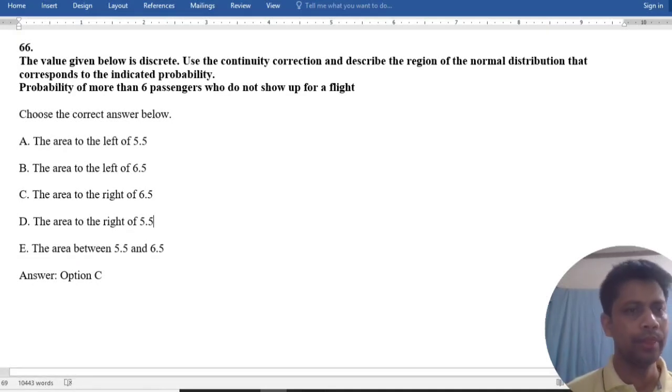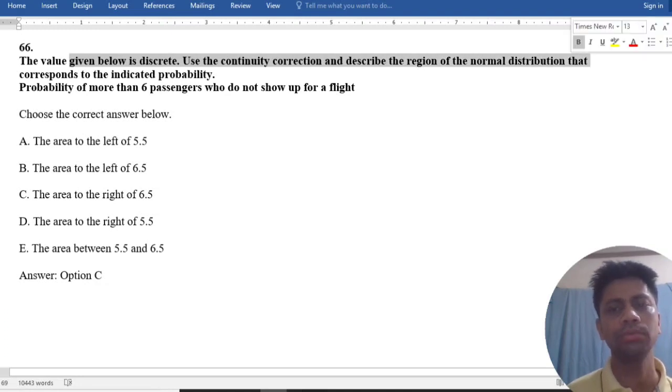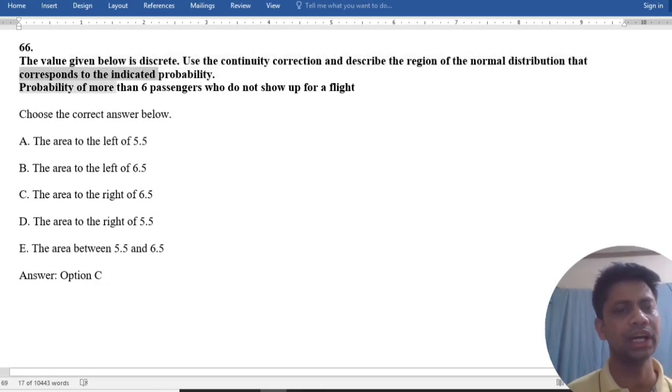Look, the value given below is discrete. Use the continuity correction to describe the region of the normal distribution that corresponds to the indicated probability.